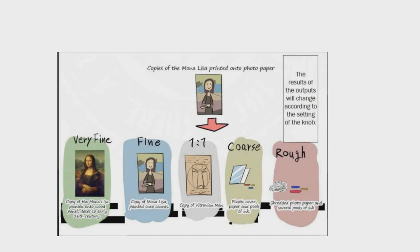The following is a test done with copies of the Mona Lisa printed onto photo paper. Rough: shredded photo paper and several pools of ink. Coarse: plastic cover, paper, and pools of ink. One-to-one: copy of Vitruvian Man.